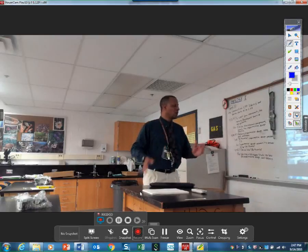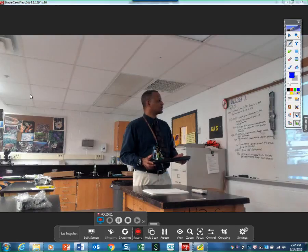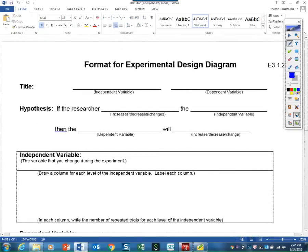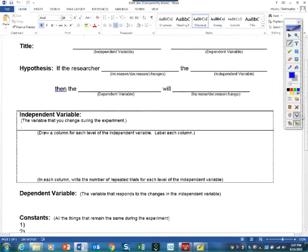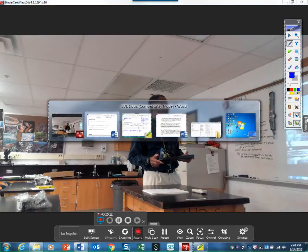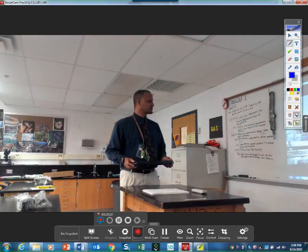So that's our experimental design diagram. Let me point out one more thing. Notice the numbers. The whole idea of this was to show the order of operations. The first thing you do is you don't write a conclusion, that's bad science. You design your experiment. You come up with the IV, the DV, write your title, your hypothesis, organize it, and then when you've done the experiment, you'll have a results table and a conclusion. That is our experimental design diagram.